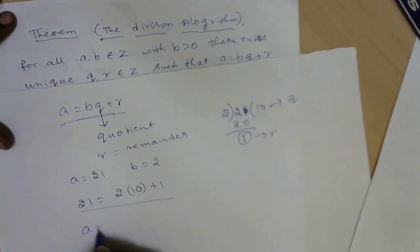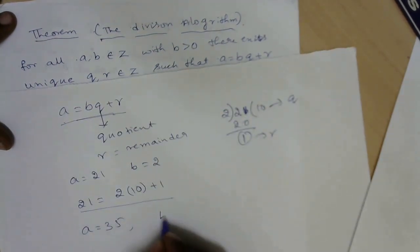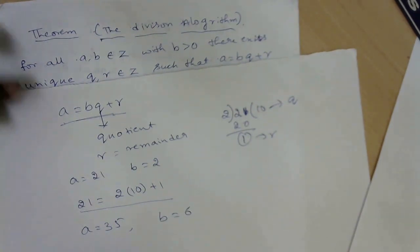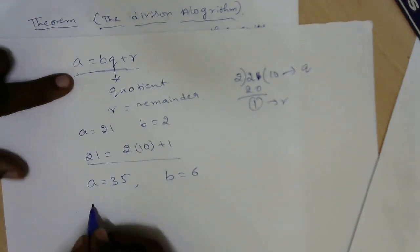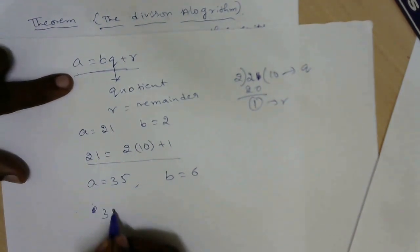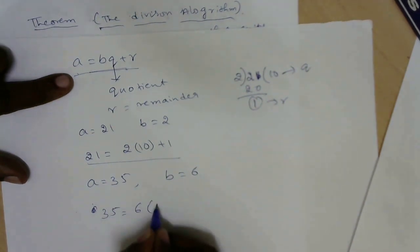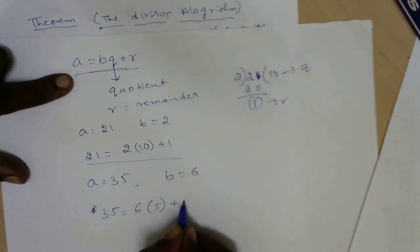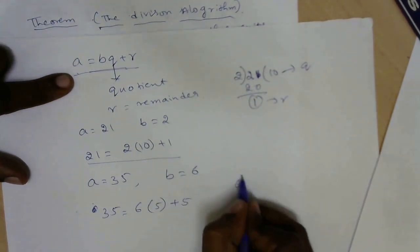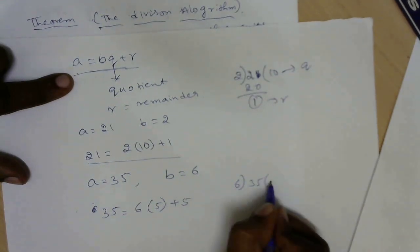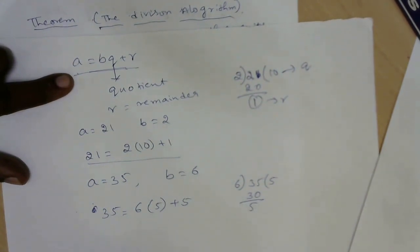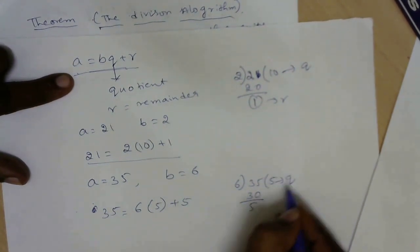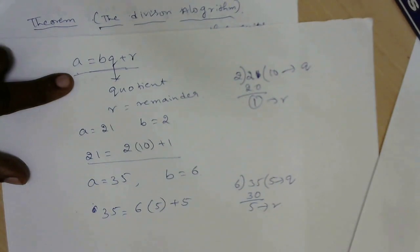Suppose a equals 35 and b equals 6. To express this in the form a equals bq plus r: 35 equals 6 times 5 plus 5, that is 30 plus 5. So the quotient is 5 and the remainder is 5.